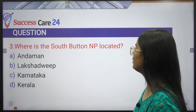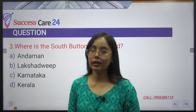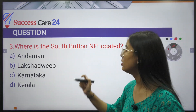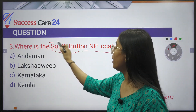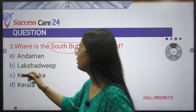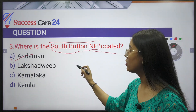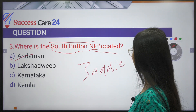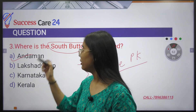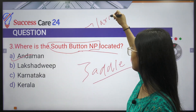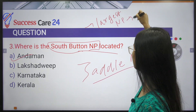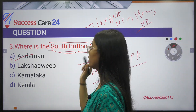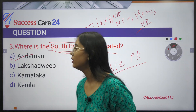Where is South Button National Park located? The most important thing is that it is India's smallest national park. It is located in Andaman and Nicobar. Saddle Peak National Park is also there, and Saddle Peak is the highest peak of Andaman. The largest national park of India is Hemis National Park, located in Ladakh.